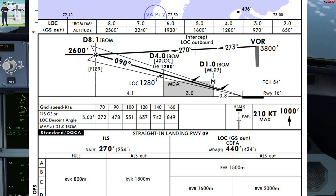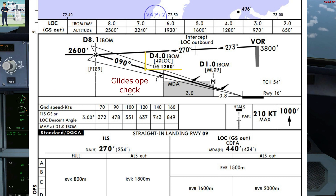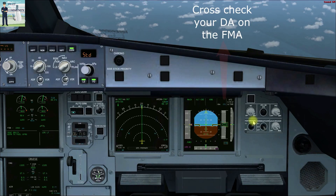Today we are being radar vectored, so our platform altitude is 2600 feet. While descending on the glide slope at 4 ILS DME, our altitude should be 1280 feet, down to the decision altitude of 270 feet, which is cross-checked on the PFD.